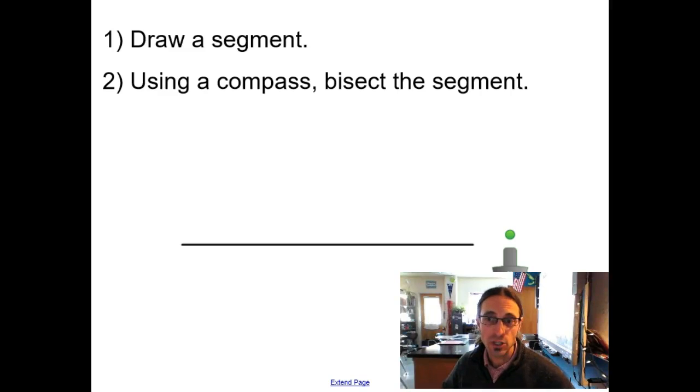The first thing, as you recall, is when you do a bisector of a segment, you actually end up creating a perpendicular bisector. And this may look familiar. Again, I've got a segment here in front of me.